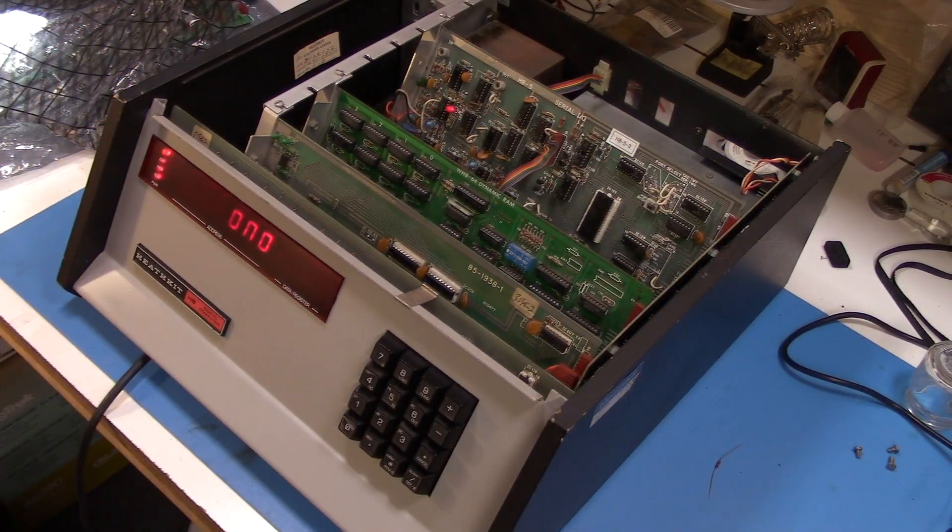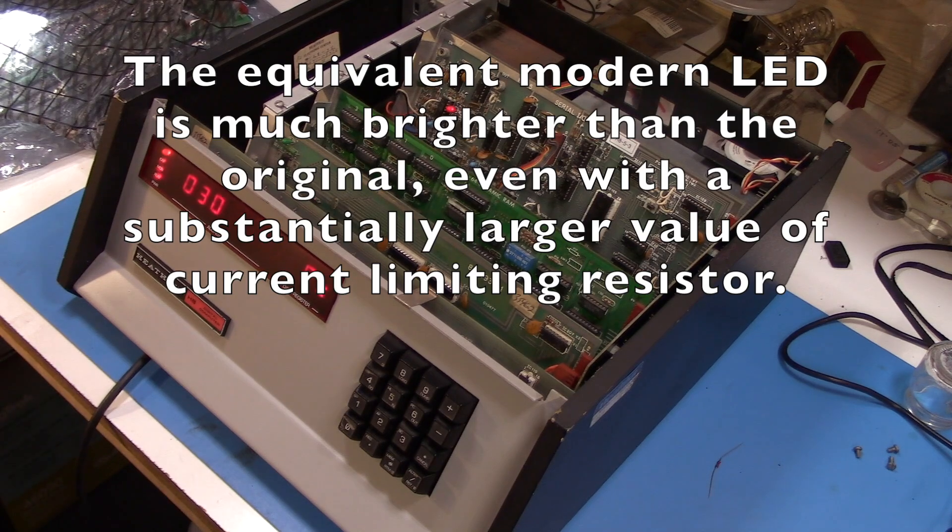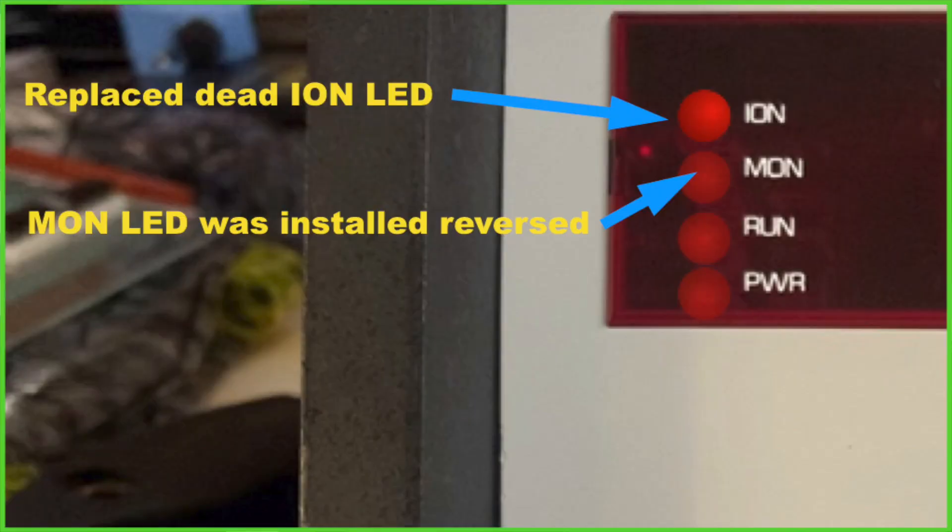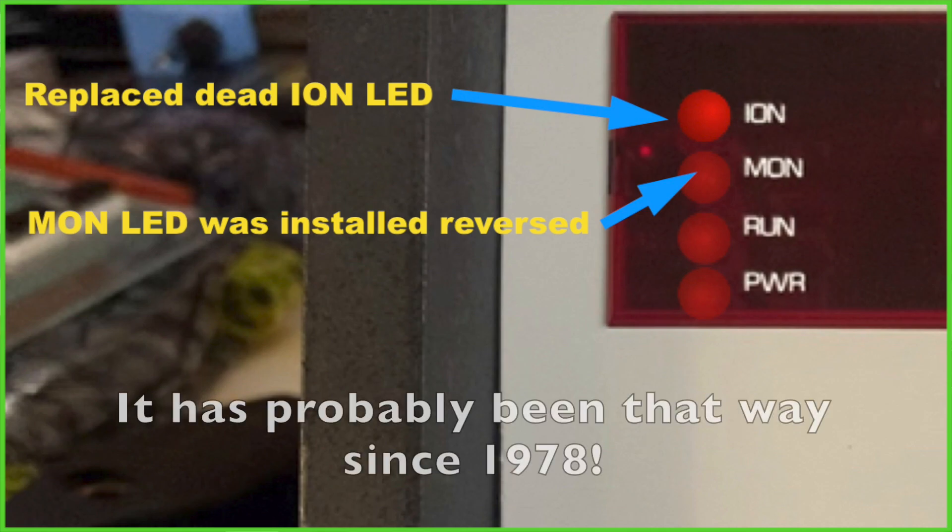I did also go ahead and fix those two LEDs. And you'll notice that they now work. One's a little brighter because it's a newer LED. And it turned out that actually the monitor LED was installed backwards in the original assembly. So I was able to correct that.